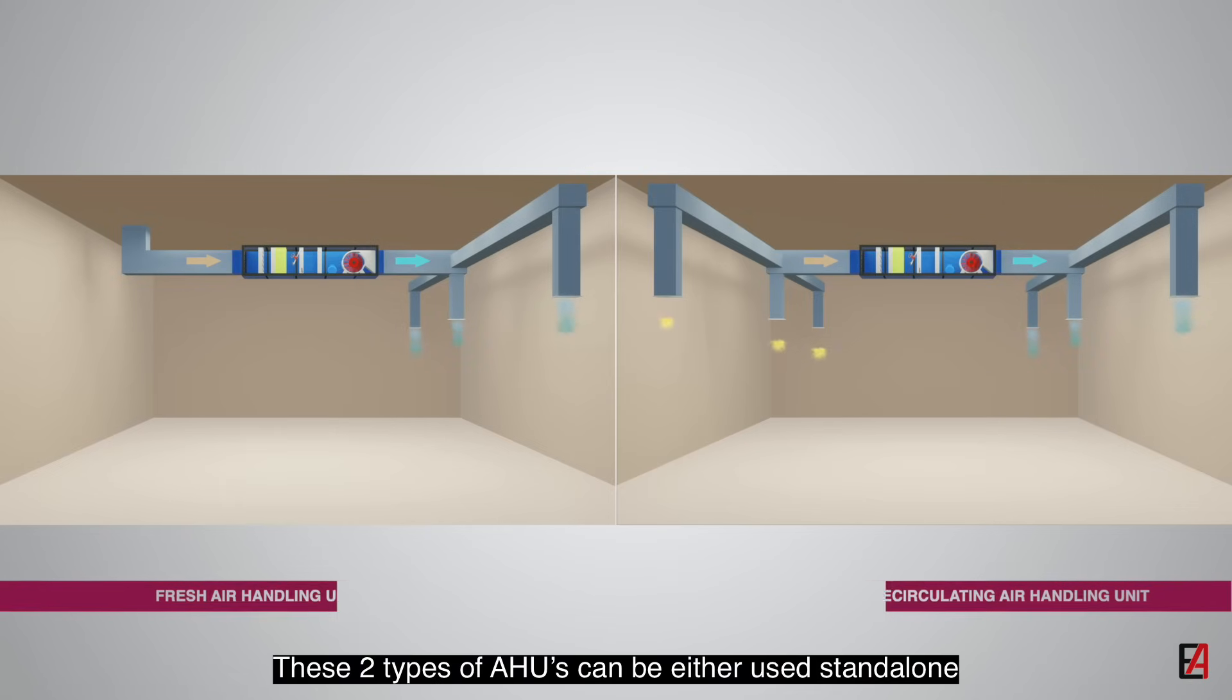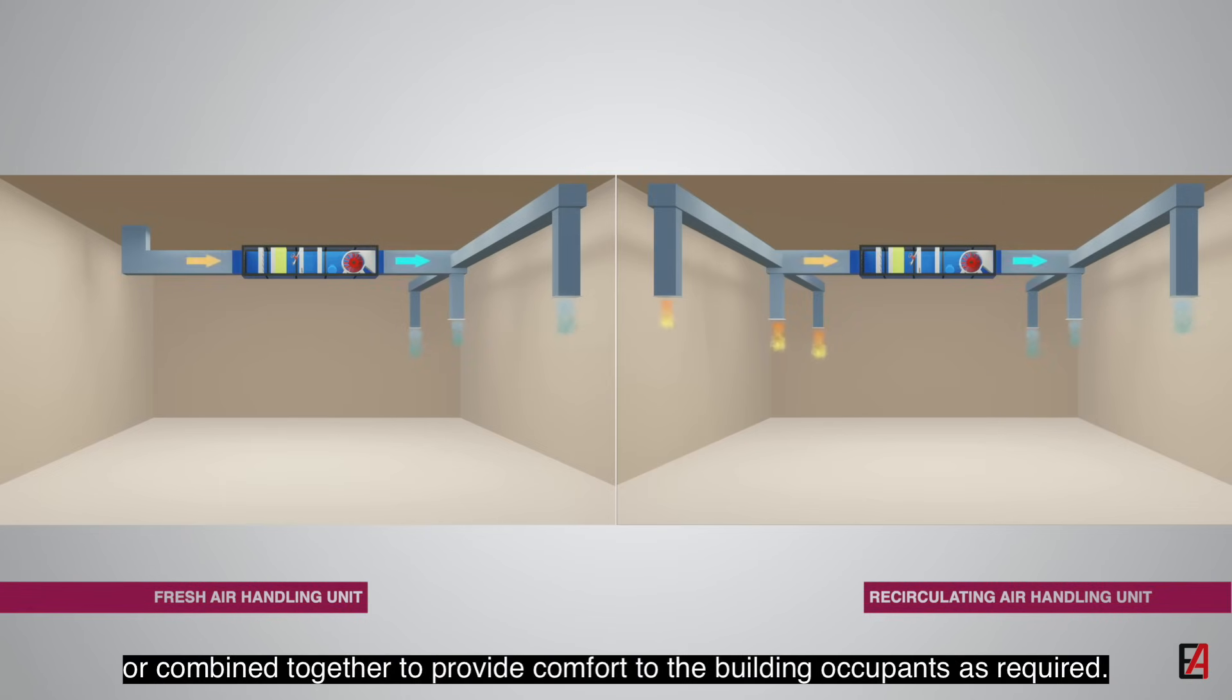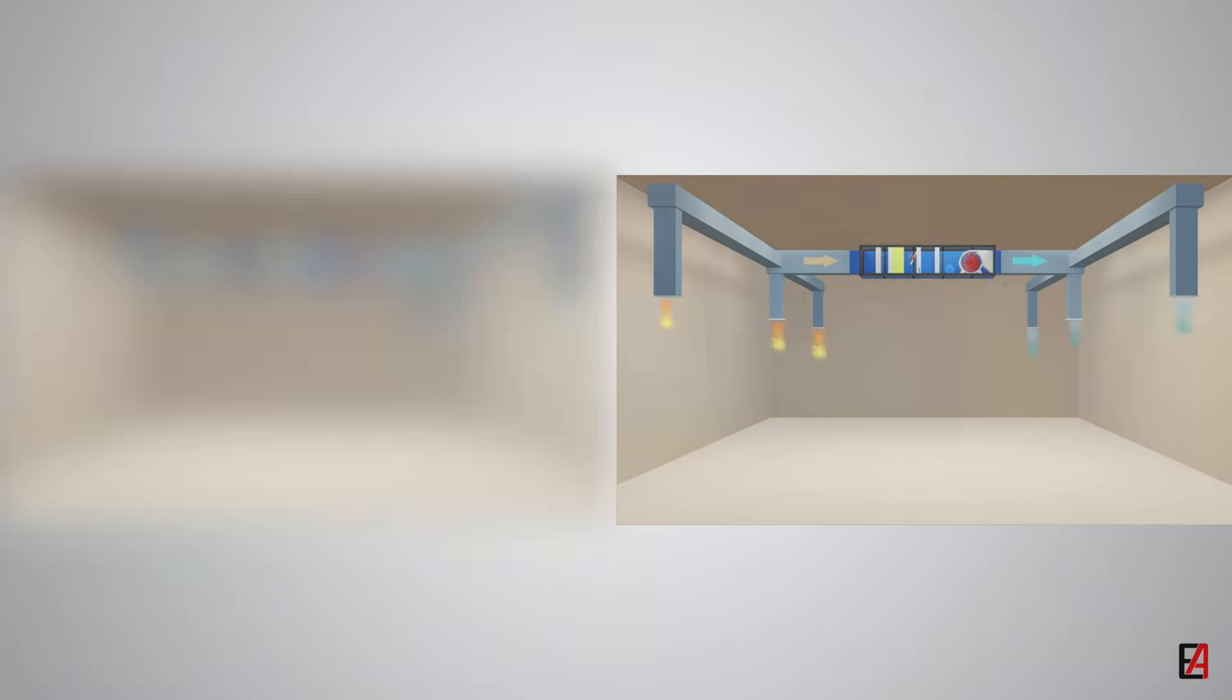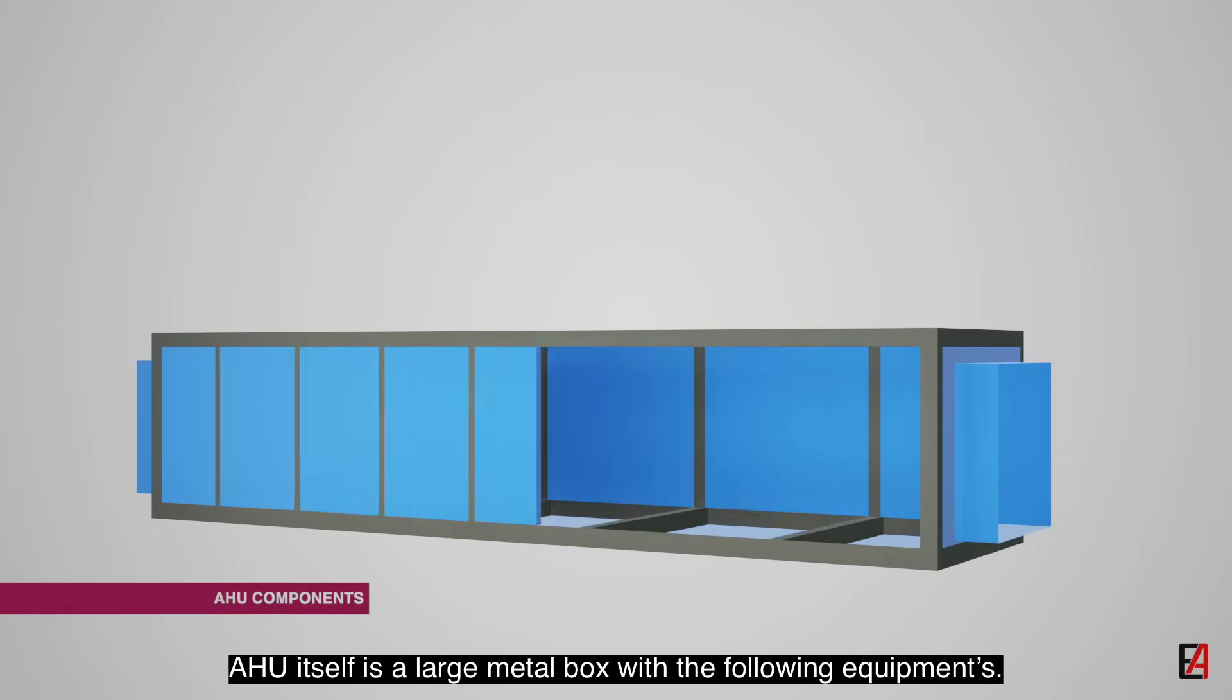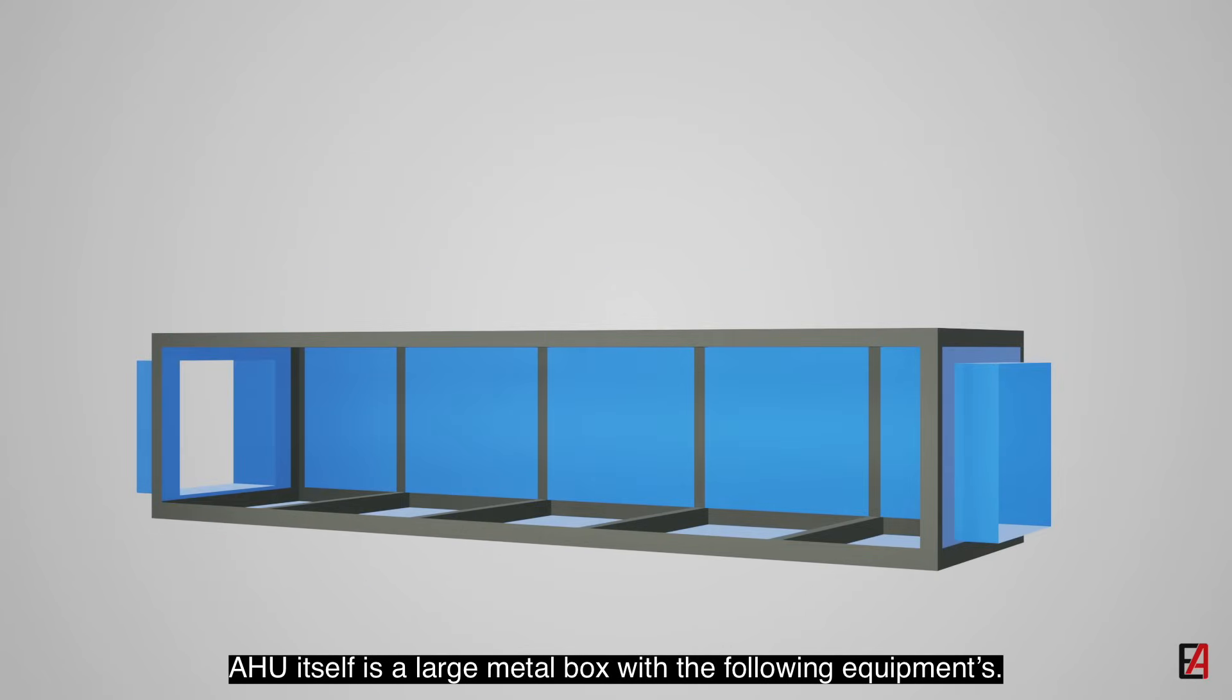These two types of AHUs can be either used standalone or combined together to provide comfort to the building occupants as required. Let's look into some of the AHU components. AHU itself is a large metal box with the following components.